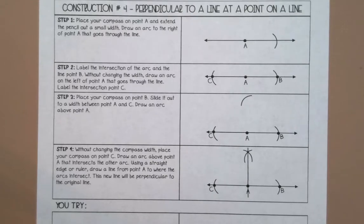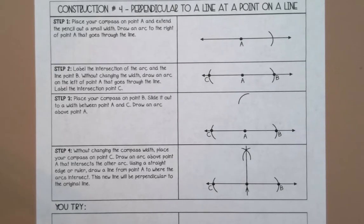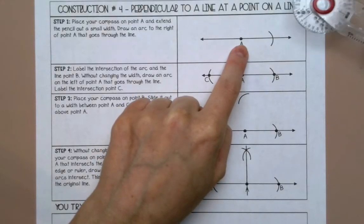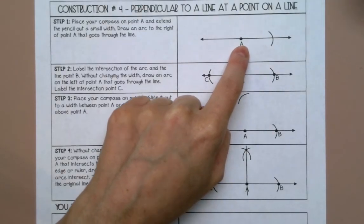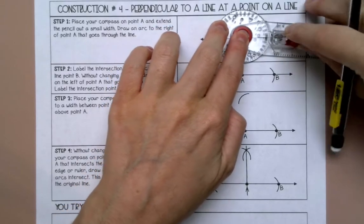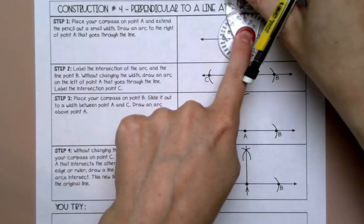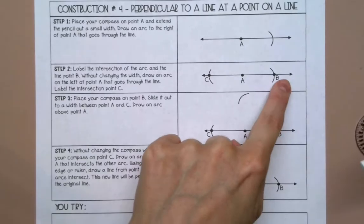Welcome to this lesson on constructing a perpendicular to a line at a point on a line. The first thing that we're going to do is place our compass on the point that we want the perpendicular line to go through and we're going to draw an arc on both sides of that point.